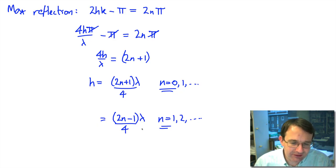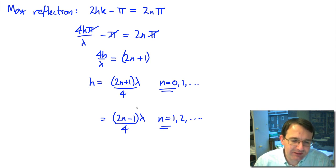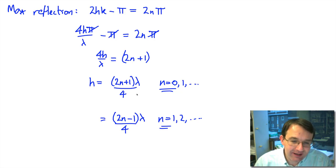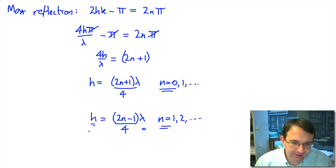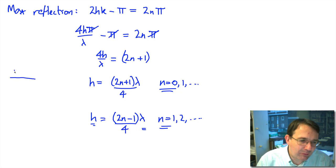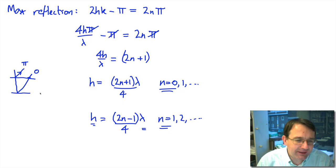Whether we get reflection or not depends on the wavelength and the thickness. If we shine white light on this film, only certain wavelengths will be reflected — that's where the colors in a soap bubble come from. Certain wavelengths cancel out and others do not, because cancellation depends on the wavelength relative to the thickness h. This is the case when one reflected ray gets a phase inversion of π and the other has a phase change of zero, giving a net reflection phase difference of π.